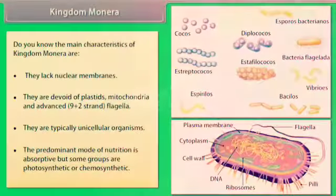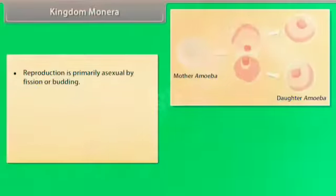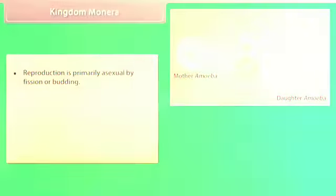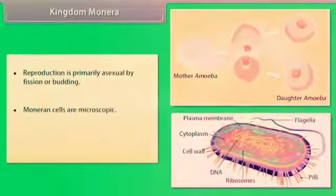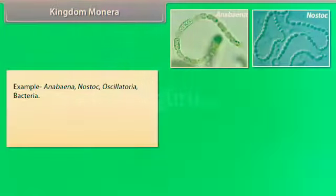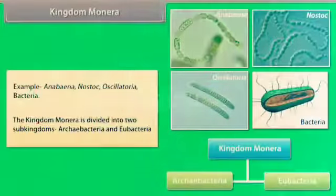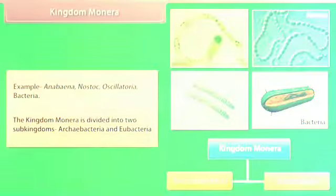Reproduction is primarily asexual by fission or budding. Most cells are microscopic. Most organisms bear a rigid cell wall. Examples include Anabaena, Nostoc, Oscillatoria, and bacteria. Kingdom Monera is divided into two sub-kingdoms: Archaebacteria and Eubacteria.